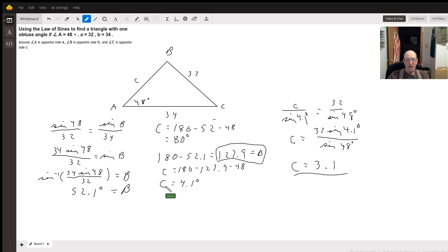So angle C equals 4.1, side C is 3.1, and angle B is 127.9 degrees.